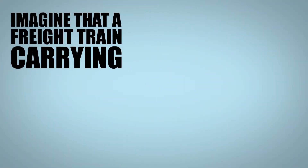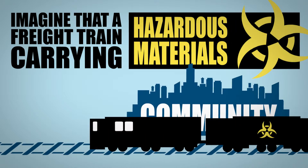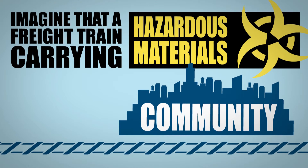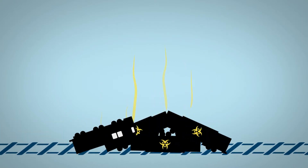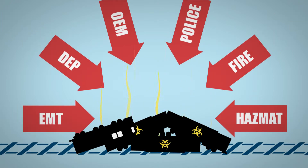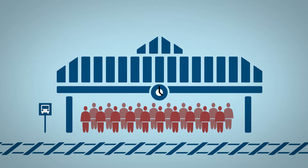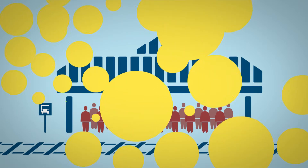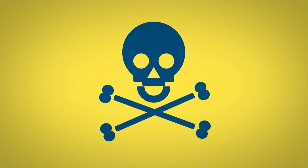Imagine that a freight train carrying hazardous materials derails near a populated area. A complex disaster of this nature, which has the potential to impact well beyond the crash site, will require the coordination of multiple agencies. The closure of the track may delay passenger and supply movement, and toxic substances might threaten the health and safety of nearby communities and the environment.